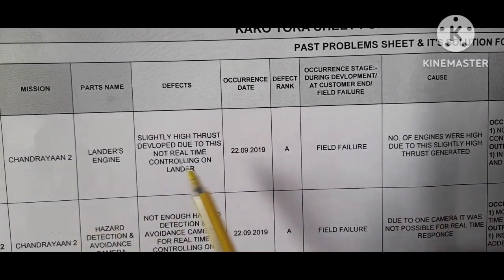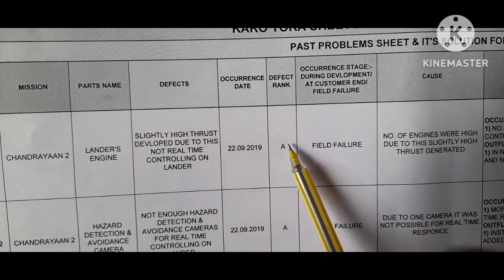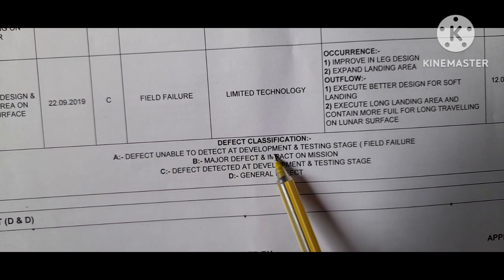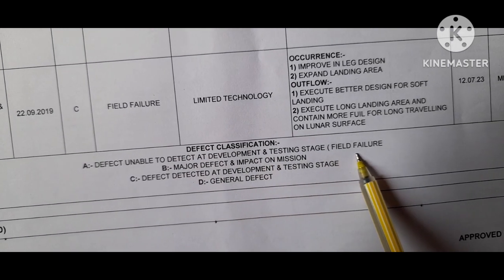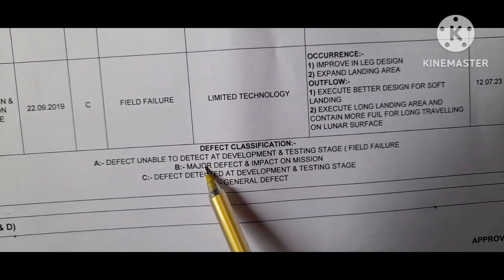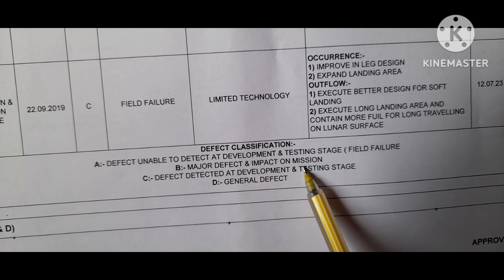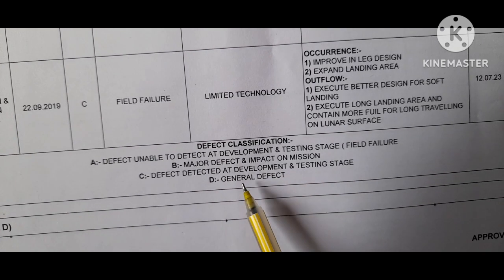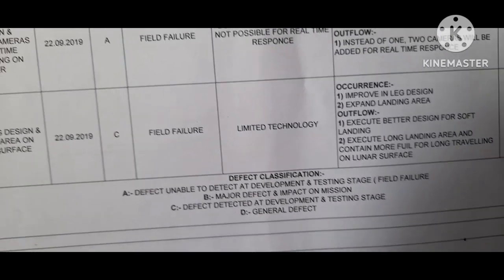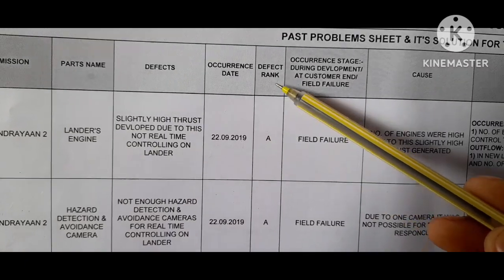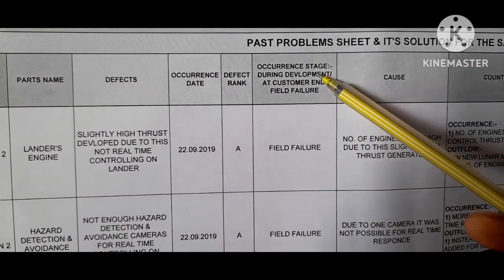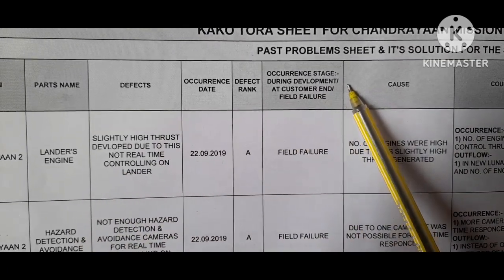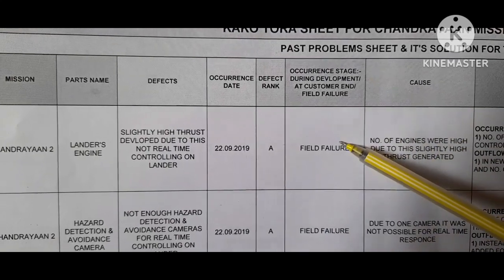Occurrence date is the date when the problem occurred. Defect rank is given as A, B, C, or D. Defect rank A means unable to detect at the development and testing stage — a field failure. B is a major defect with impact on mission. C means defect detected at development and testing stage. D is a general defect. Here we are giving defect rank A.